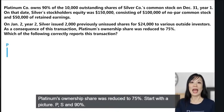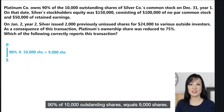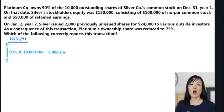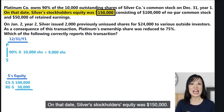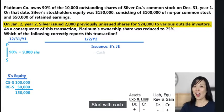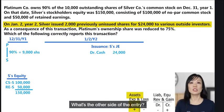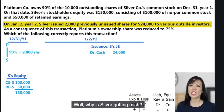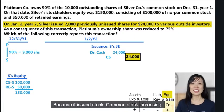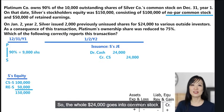Starting with the picture: Platinum owns 90% of Silver's 10,000 outstanding shares, which equals 9,000 shares, as of December 31st Year 1, when Silver's stockholders' equity was $150,000. On January 2nd Year 2, Silver issues 2,000 new shares for $24,000. For Silver's journal entry: debit cash $24,000, credit common stock $24,000. Because this is no-par common stock, the entire $24,000 goes into common stock with no APIC.